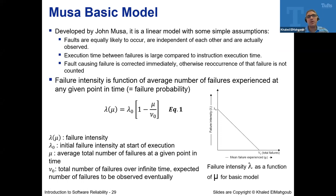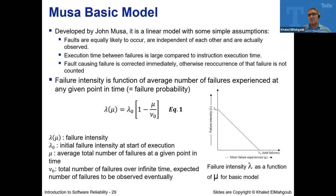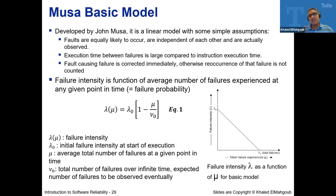Let me start with one of the models called the Musa model — the Musa Basic Model. John Musa is a researcher who worked extensively in software reliability and has a book on the subject. He has a couple of models; we're going to study two of them today. The first is the basic Musa model, and the second is the Musa-Okamoto model. Both are linear models — meaning the failure intensity has a linear relationship with the mean failure experienced.